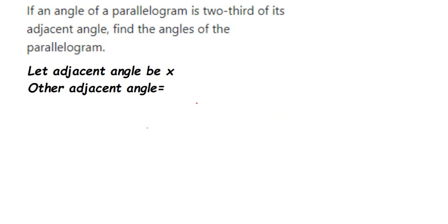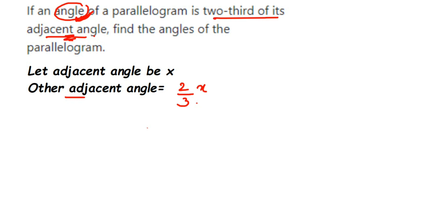This adjacent angle is x. Now the other angle is two-thirds of its adjacent angle, so it will be two-thirds of x. I now have two angles: x and two-thirds of x.